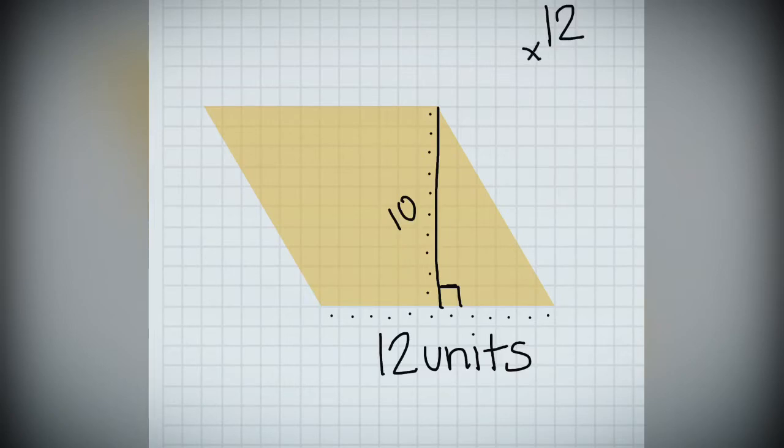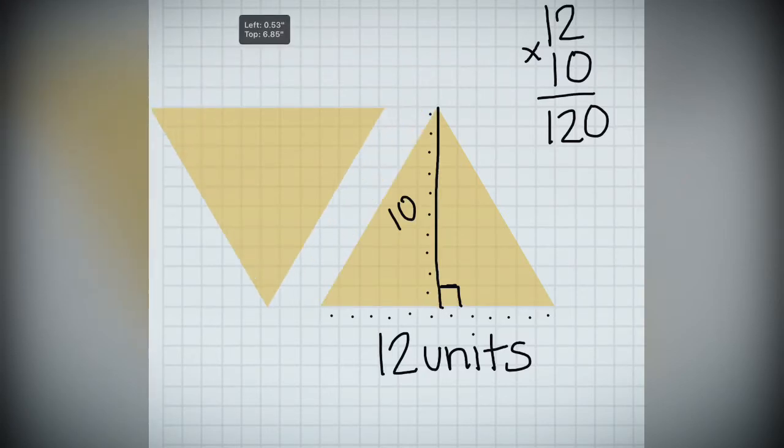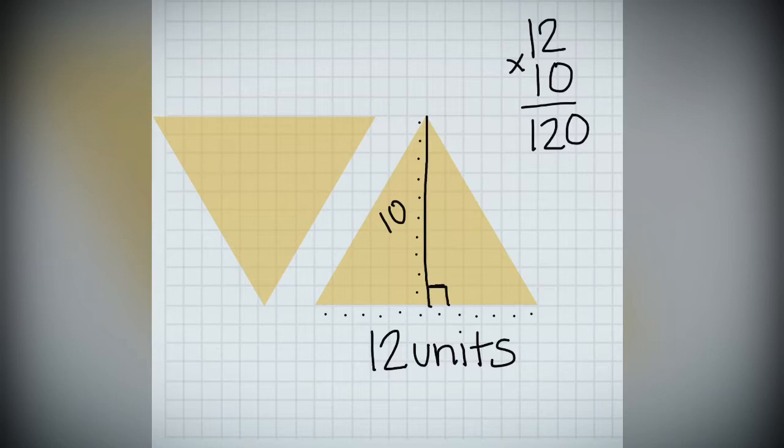Again, the area formula for the parallelogram says to multiply base times height. So, therefore, the whole yellow, 120 squares. But, whoa, if I pull it apart, what do I have again? Two equal triangles. So, I'm going to take the 120 and divide it by 2, and I am going to give the area for each triangle a value of 60 units squared.